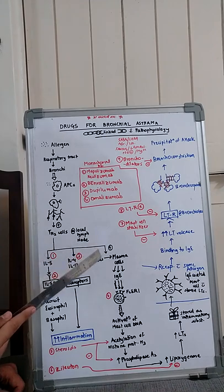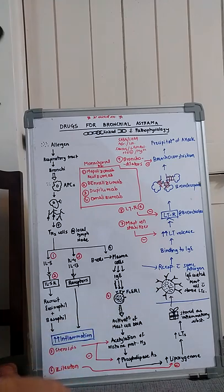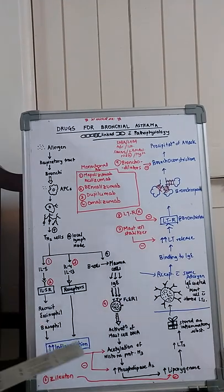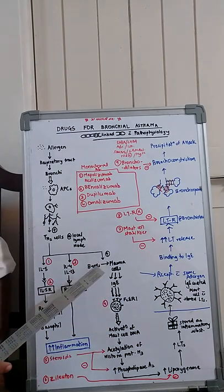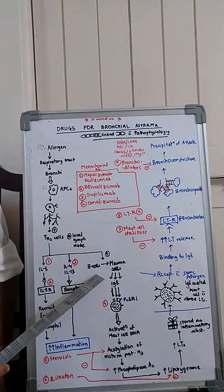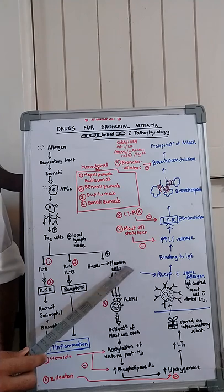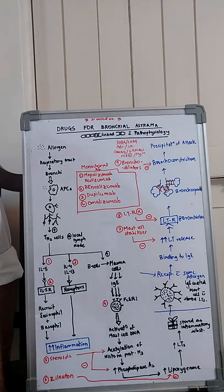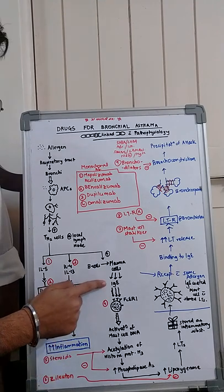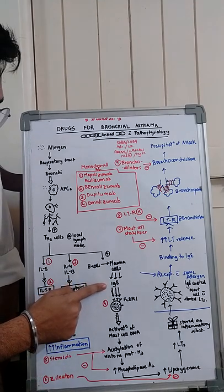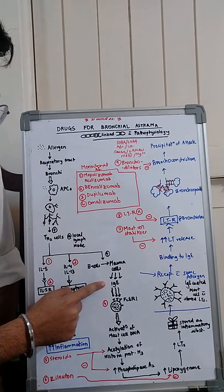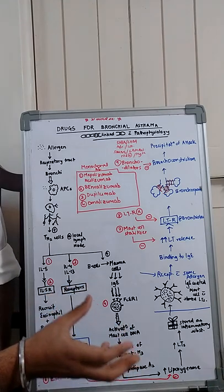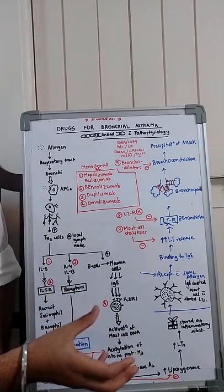Some interleukins lead to activation of B cells into plasma cells. This B cell to plasma cell activation is mediated by interleukins. These plasma cells are responsible for forming IgE antibodies.